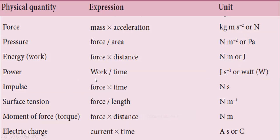Power is work by time. Work is Joule and time is second, so power is Joule per second. Another unit named after the scientist is Watt, symbol capital W. Impulse is force into time — Newton into second, so the unit is Newton second (Ns). Surface tension is force by length — Newton per meter. Moment of force, otherwise called torque, is force into distance — also Newton meter.